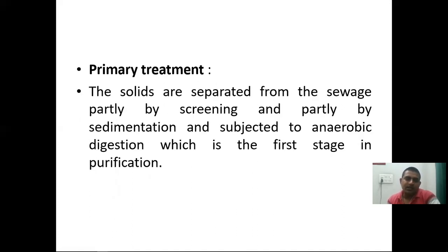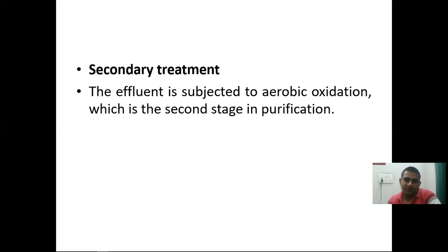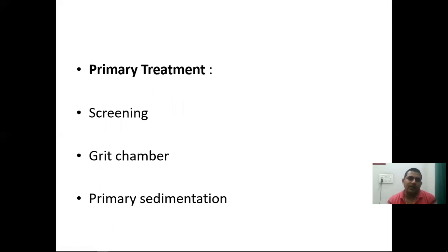In primary treatment, solids are separated from the sewage partly by screening and partly by sedimentation, and subjected to anaerobic digestion, which is the first stage in purification. The effluent is then subjected to aerobic oxidation as the second stage. Primary treatment involves screening, a grit chamber, and primary sedimentation.